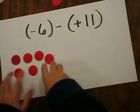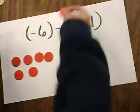Then you have to determine how many zero pairs you need. Zero pairs are one positive and one negative tile.